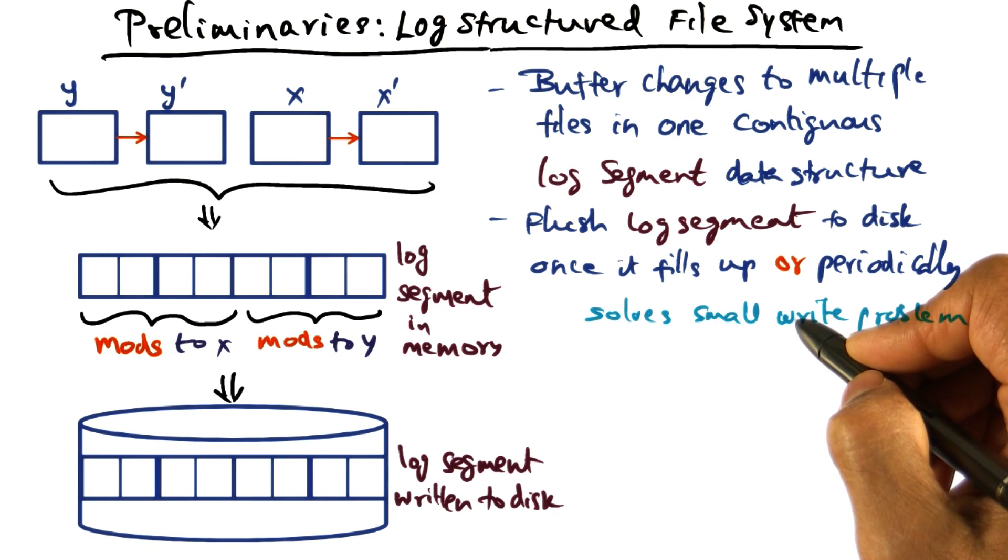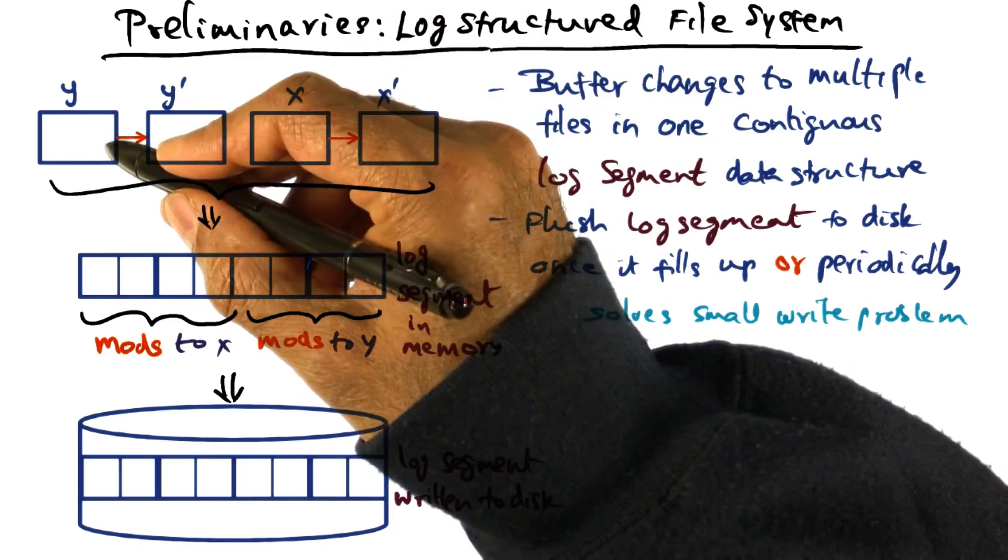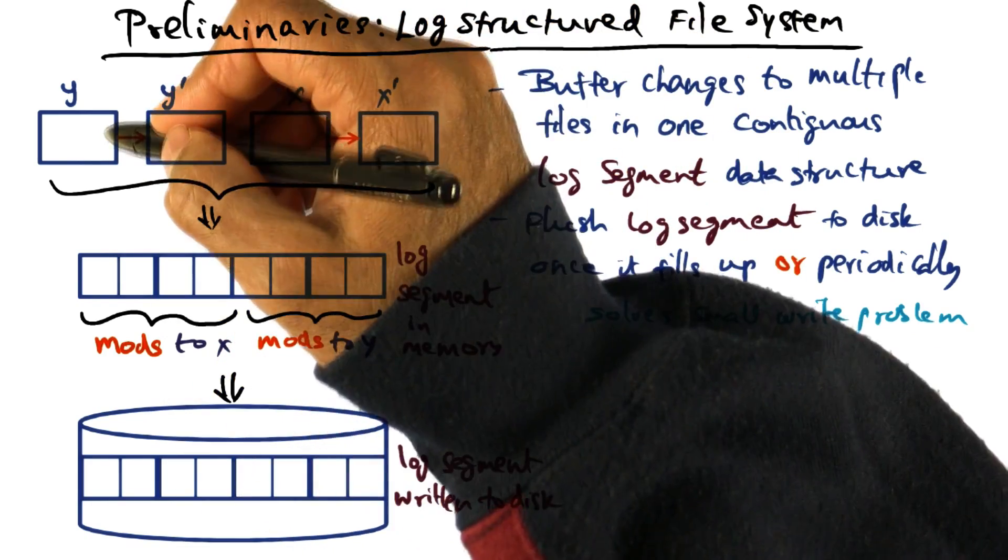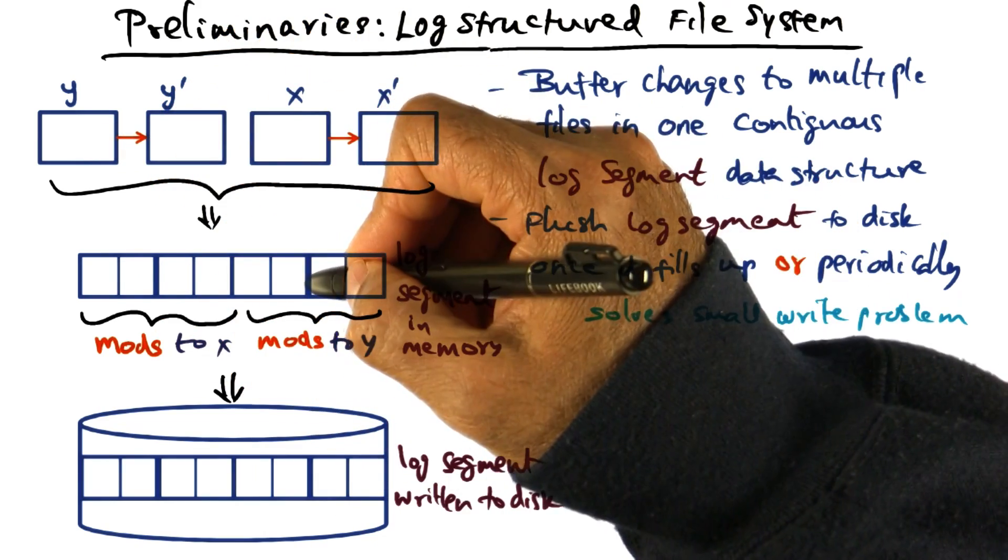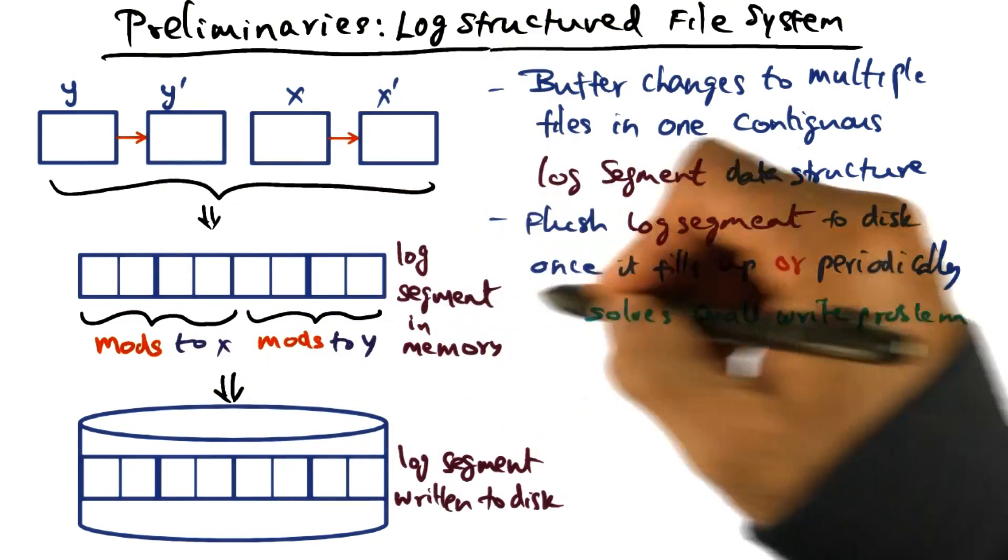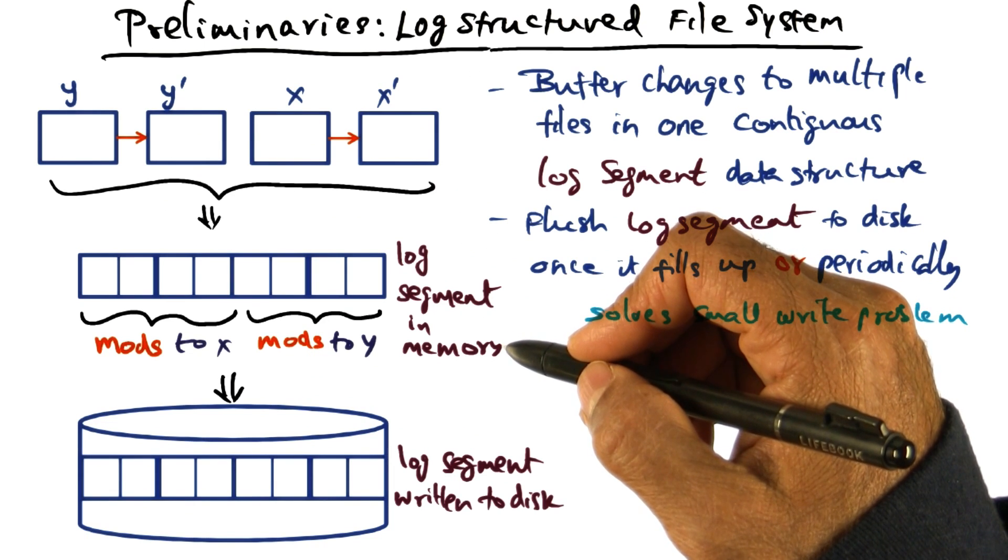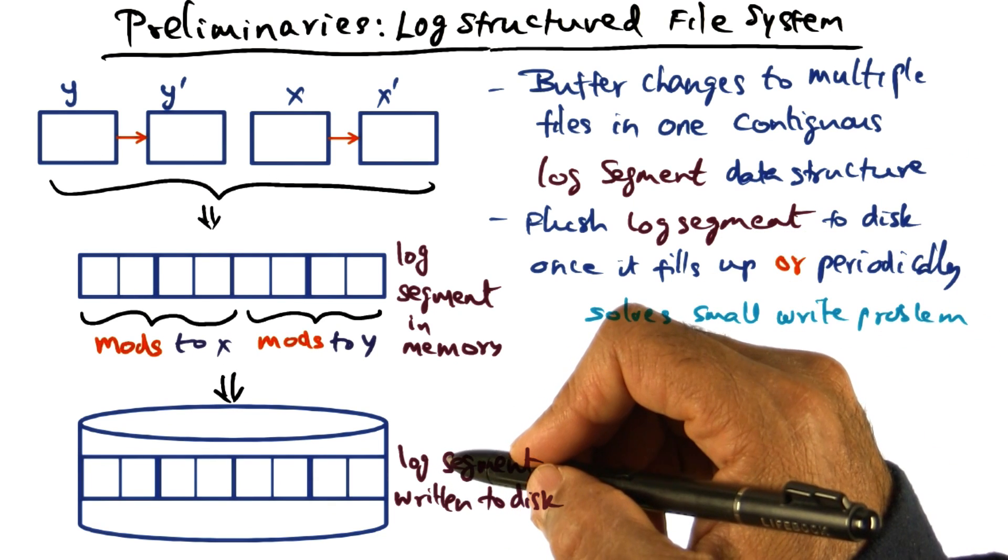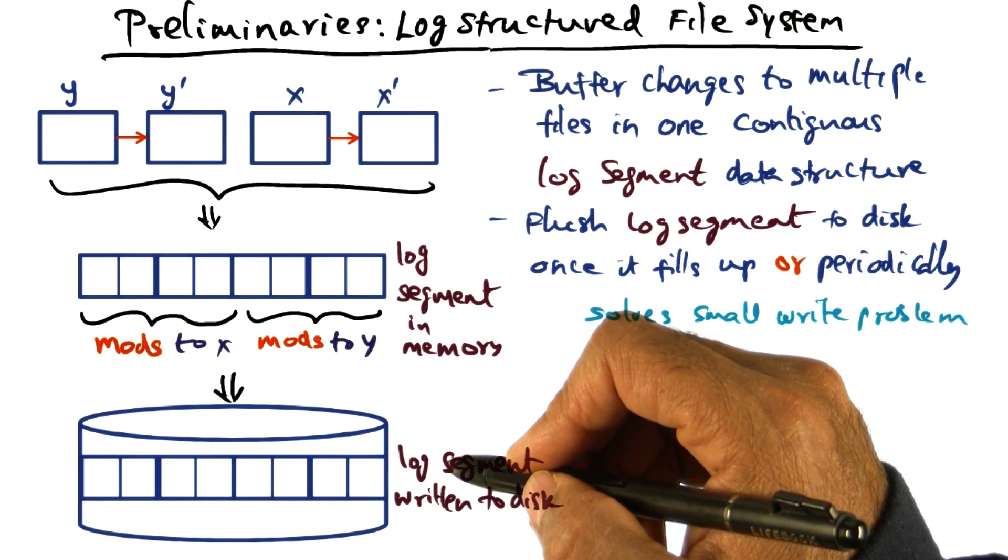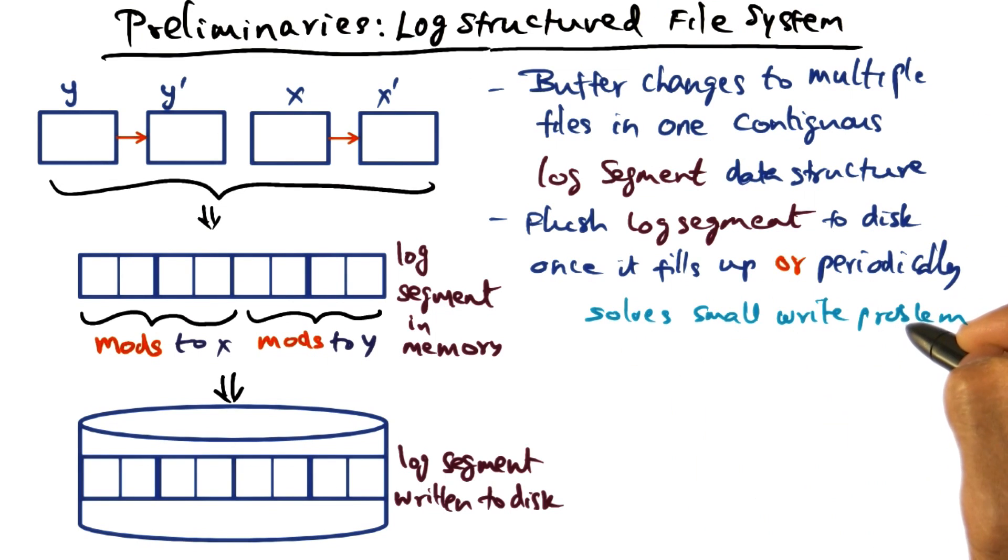And this solves a small write problem, because if y happens to be a small file, no problem, because we're not writing y as is onto the disk. But what we are writing is the log segment that contains changes that have been made to y, in addition to changes that have been made to a number of other files. And therefore, this log segment is going to be a big file. And therefore, we can use the RAID technology to stripe the log segments across multiple disks and get the benefit of the parallel I/O that's possible with the RAID technology. So this log-structured file system solves the small write problem.